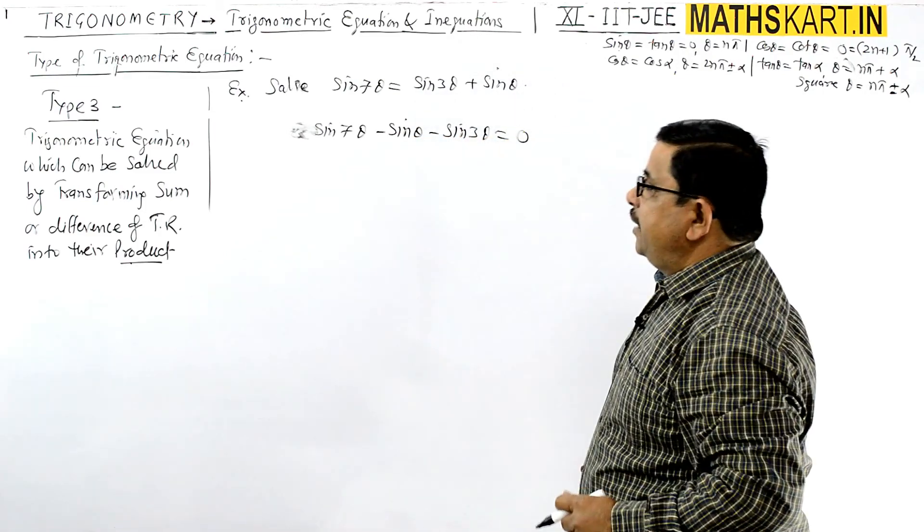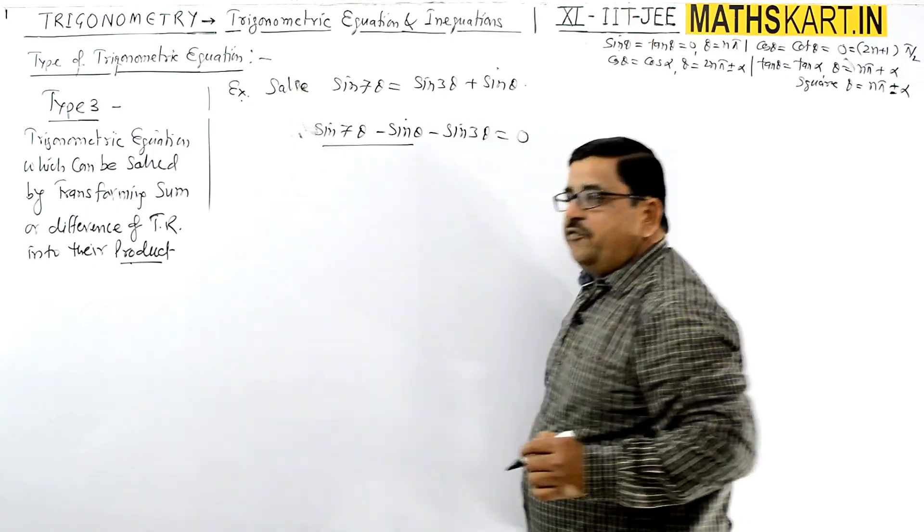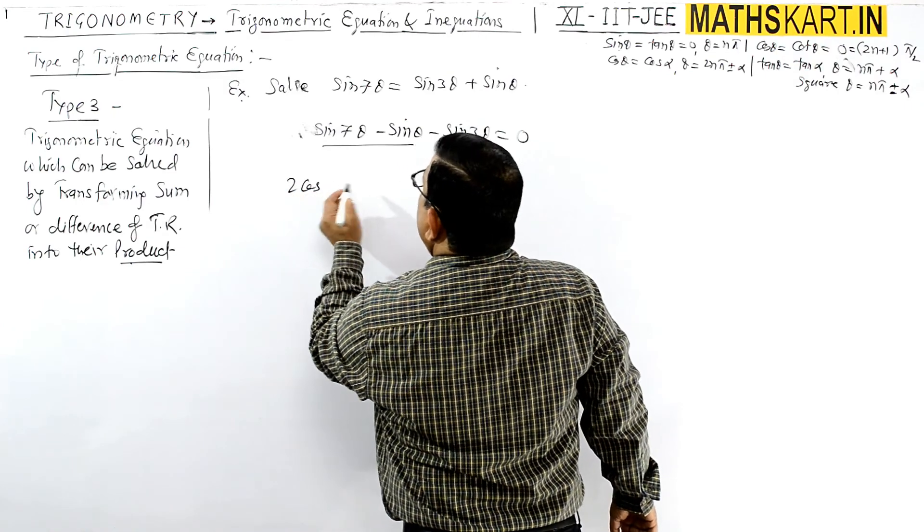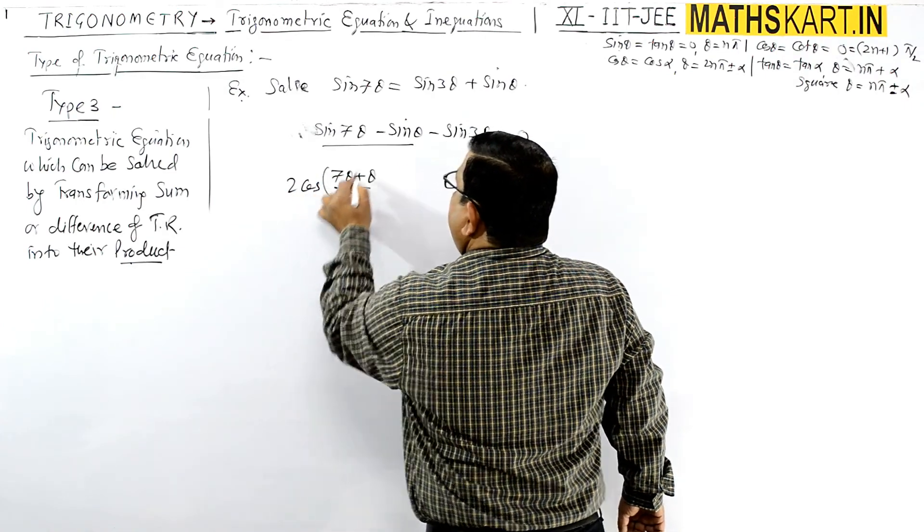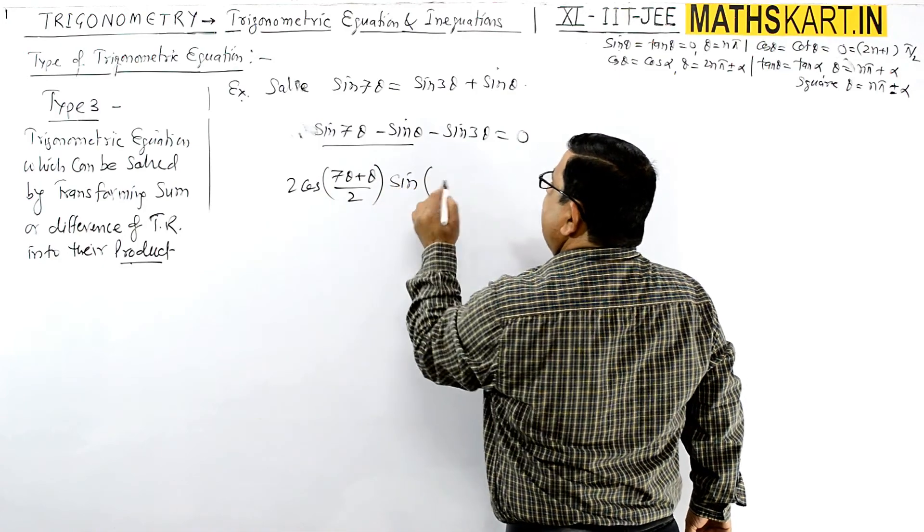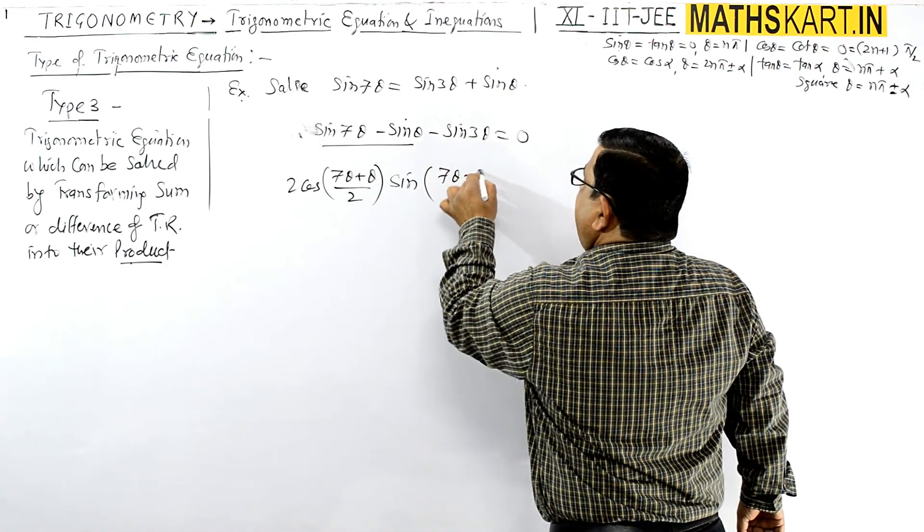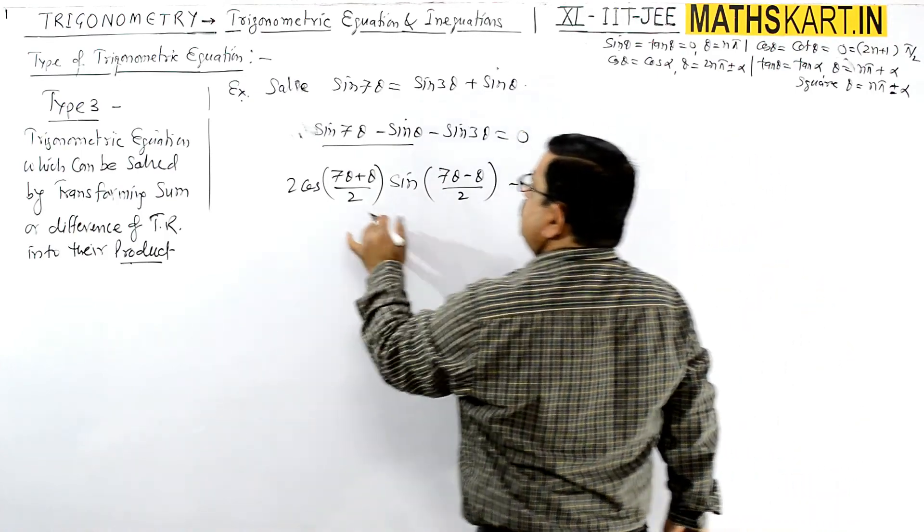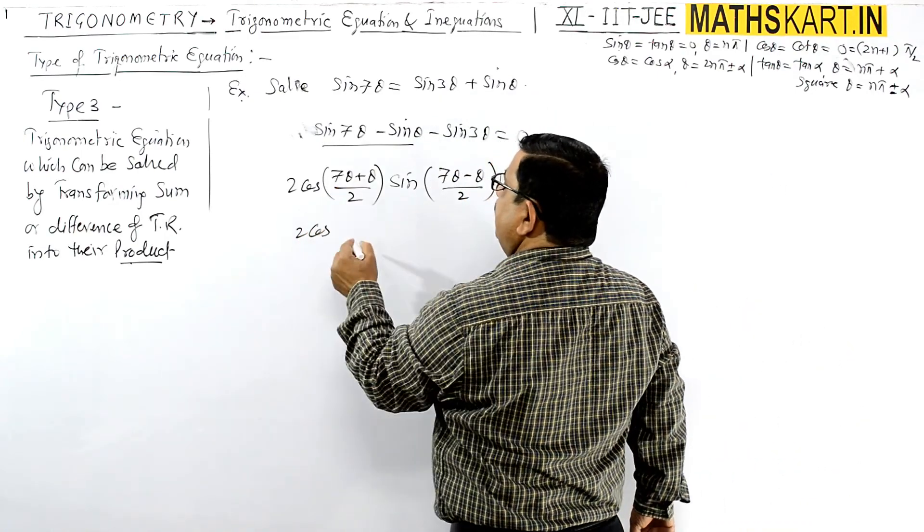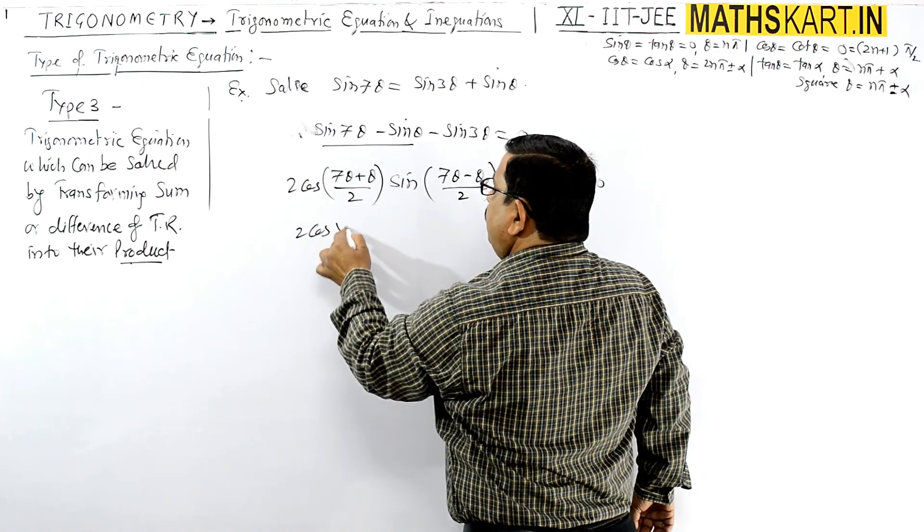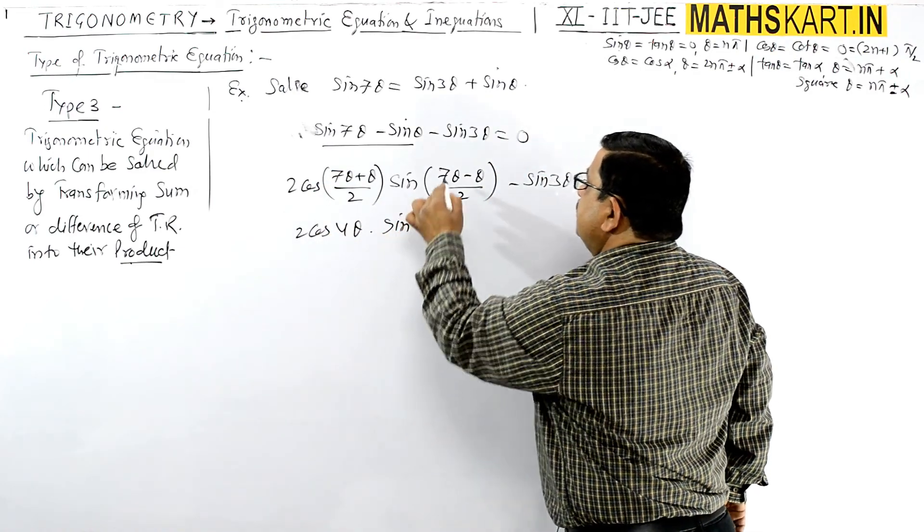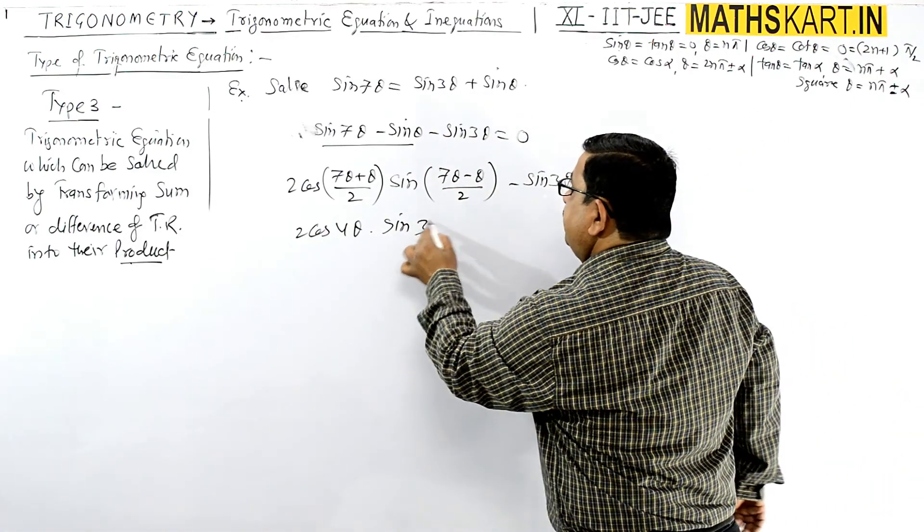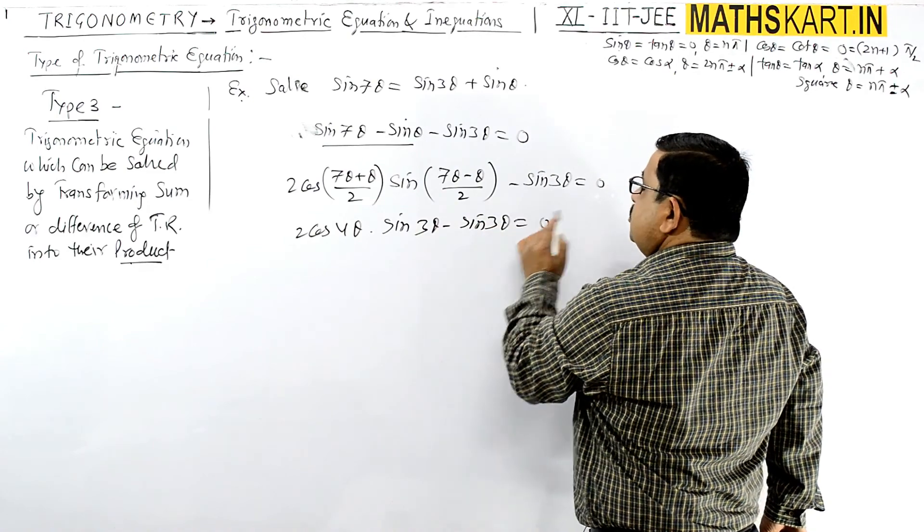Now write down the sin C - sin D formula. This becomes 2 cos((7θ + θ)/2) sin((7θ - θ)/2) - sin 3θ = 0. This gives us 2 cos 4θ sin 3θ - sin 3θ = 0.